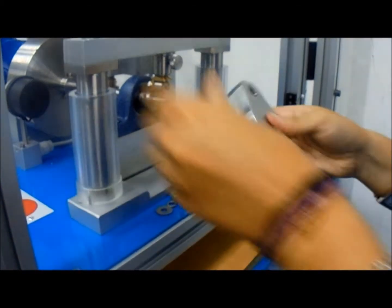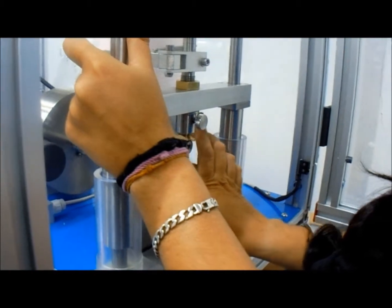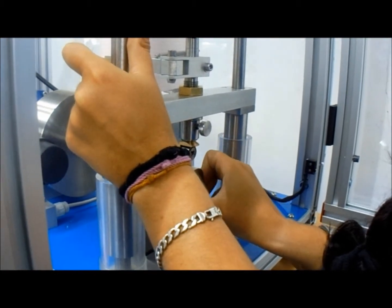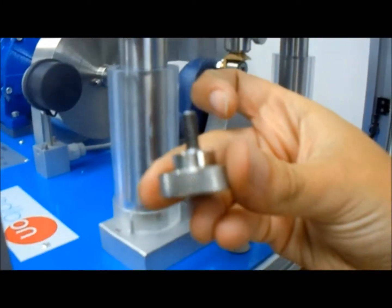A CAM is a mechanical element that rotates or moves forwards and backwards to create a set motion in contact with an element known as a follower.